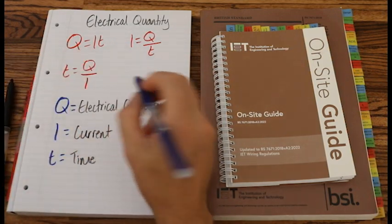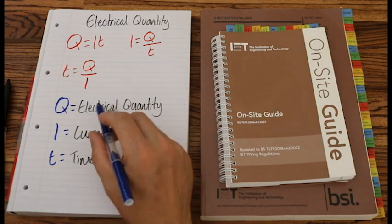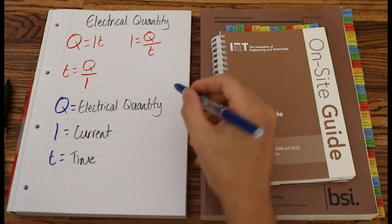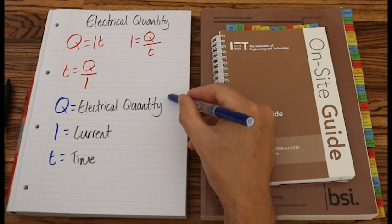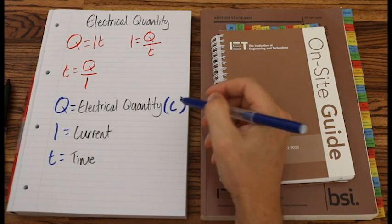I'll grab my blue pen again. Now, we'll write down the SI unit for each of these. So, Q, electrical quantity, is measured in capital C, coulombs.